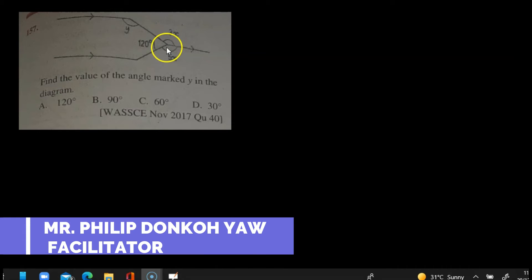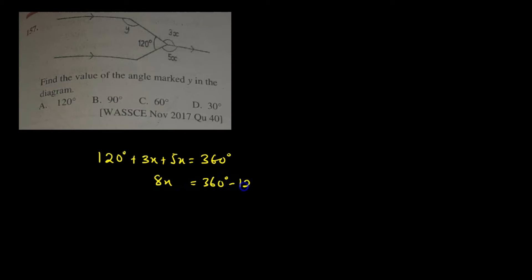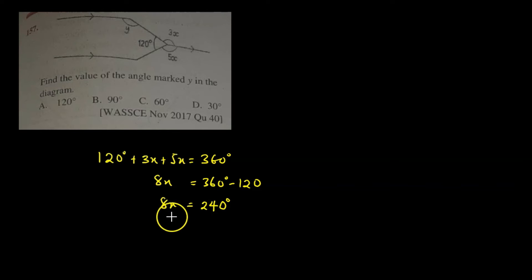In finding the value of X, we are going to obtain a total angle of 360 degrees because all three angles meet at a common point, giving us a total of 360 degrees. So: 120 degrees plus 3x plus 5x must be equal to 360 degrees. Therefore 8x equals 360 minus 120 degrees, giving us 8x equals 240 degrees.